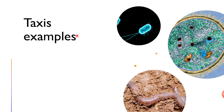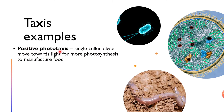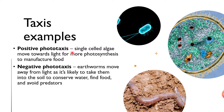Examples of taxis: positive phototaxis is when single-celled algae move towards light so they can photosynthesize more to manufacture food. Negative phototaxis is when earthworms move away from light, taking them into the soil, where they can conserve water, find food, and avoid predators — increasing their likelihood of survival. So negative phototaxis is a simple response away from an unfavorable light stimulus.